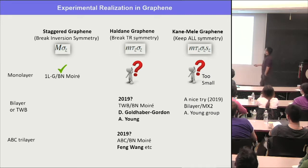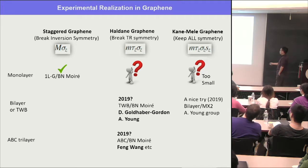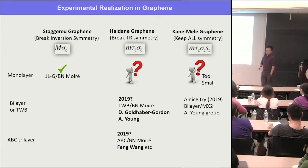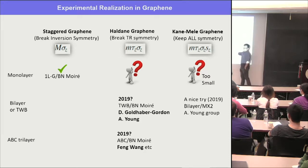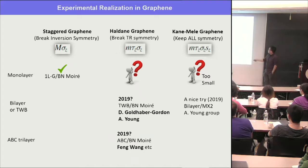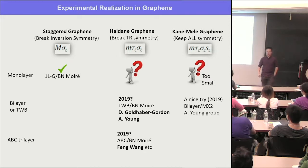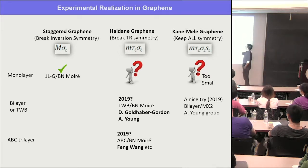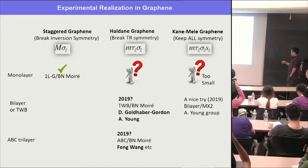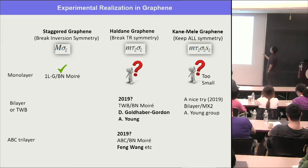However, there are very exciting recent developments in 2019 — as we heard from Feng Wang's talk — including twisted bilayer graphene plus boron nitride and ABC trilayer graphene, where quantum anomalous Hall effect has been realized. For the Kane-Mele graphene, bilayer graphene attempts by Andrew Young's group involve introducing spin-orbit coupling by placing bilayer graphene on TMD materials, but the Kane-Mele term hasn't been fully realized yet.